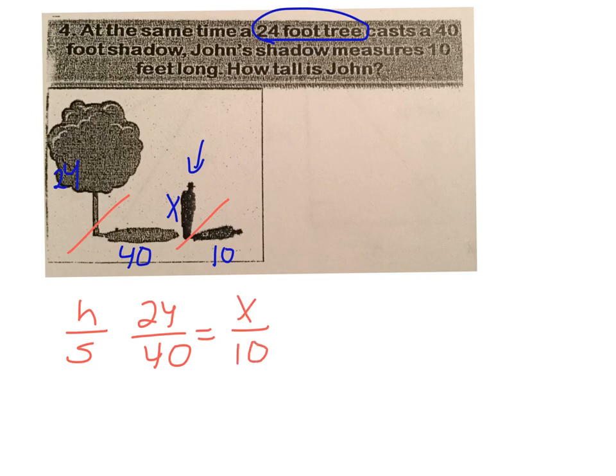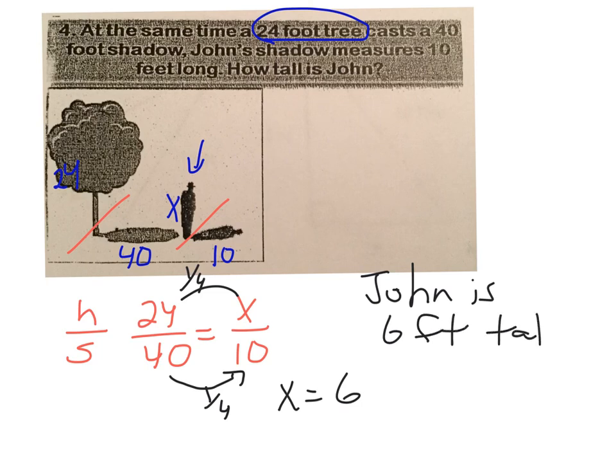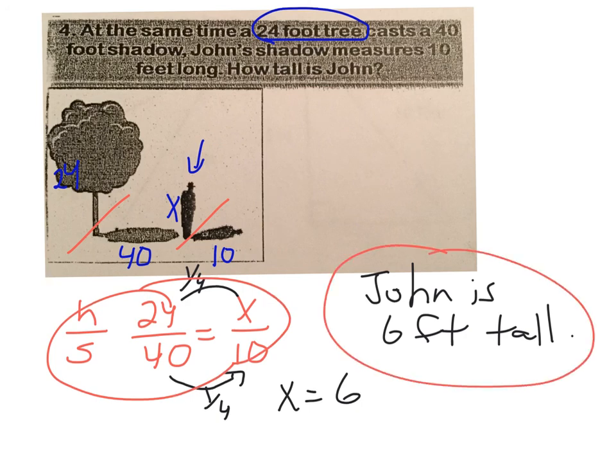So all I have to do is set up my proportion. I'm going to use actually the height over the shadow. So 24 over 40 equals the height of the guy, John, versus his shadow of 40. Now I recognize right away that my scale factor is dividing by 4. That means one-fourth of its size. So a one-fourth of that. 24 divided by 4 gets you 6. So John is 6 feet tall. Final answer. So again, the red part is part of your answer. And the black part is part of your answer. All of it. Set it up and solve.